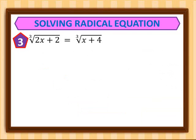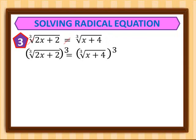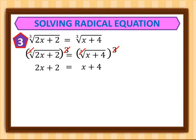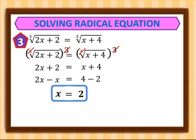For example number 3, the cube root of 2x plus 2 equals the cube root of x plus 4. We cube both sides automatically, canceling both radicals, leaving us 2x plus 2 equals x plus 4. Combining like terms — variables to the left, constants to the right — gives us 2x minus x equals 4 minus 2, so x equals 2.